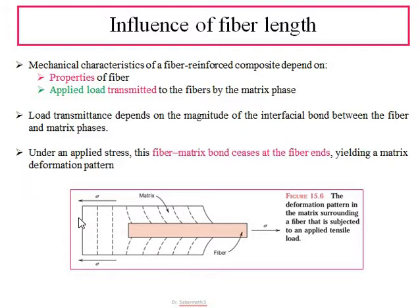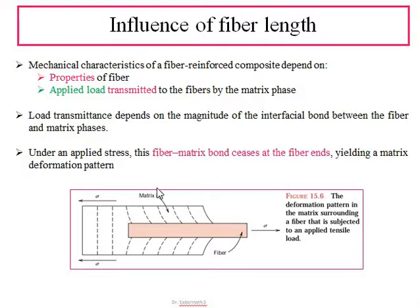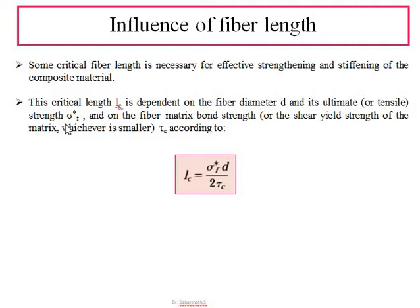In the figure, the white portion represents the matrix and the rose-colored portion indicates the fiber part. The load transmitted depends on the magnitude of the interfacial bond between the matrix and the fiber. When a force or stress is applied, the fiber-matrix bond is subjected to yielding and a deformation pattern is obtained. For an effective composite, the fiber should have some critical fiber length.